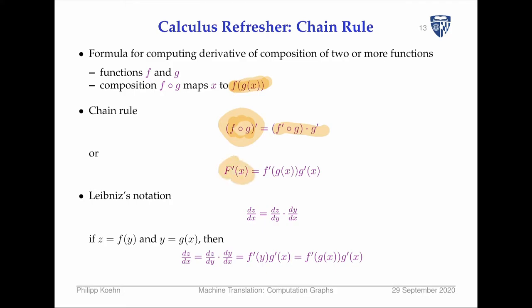Another way to put it: if you have this more complex function and you want to compute the derivative, it is the derivative of function f with the actual value of function g as input, multiplied by the derivative of function g with the input value put in. Here's another notation — Leibniz notation — that looks like this, which is what we worked through a lot last time. This gives us the same kind of update rule.